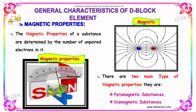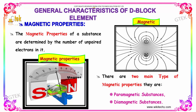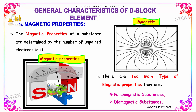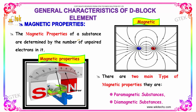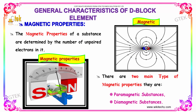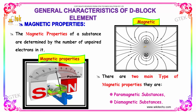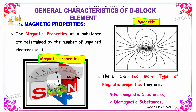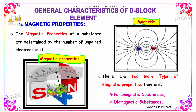Let's talk about the general characteristics of d-block elements. Under this, I am going to talk about the magnetic properties. The magnetic properties of a substance are determined by the number of unpaired electrons. Two main types of magnetic properties are available: one is paramagnetic, and the other one is diamagnetic.